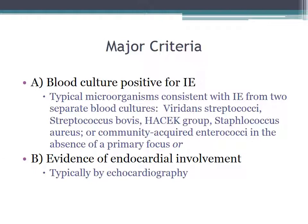The first major criterion is blood culture positive for infective endocarditis — typical microorganisms consistent with infective endocarditis from two separate blood cultures, which include viridans strep, strep bovis, the HACEK group, staph aureus, or community-acquired enterococci in the absence of a primary focus.